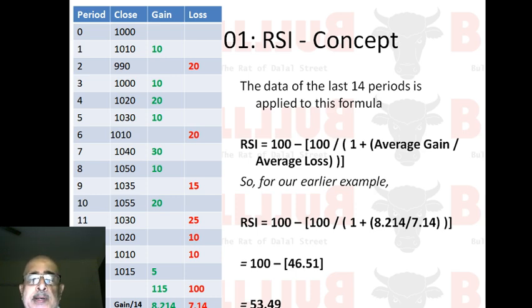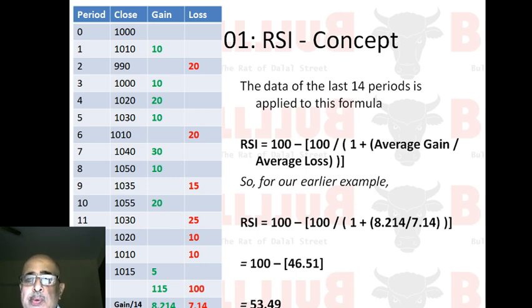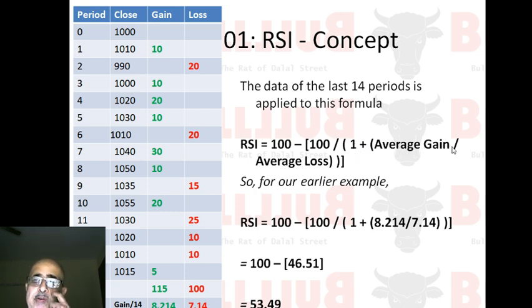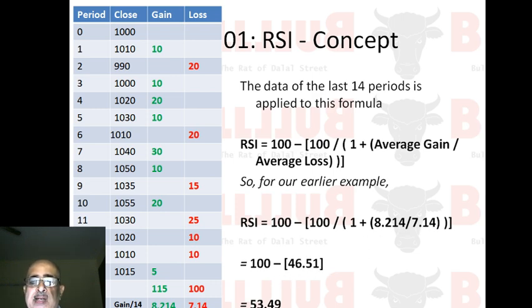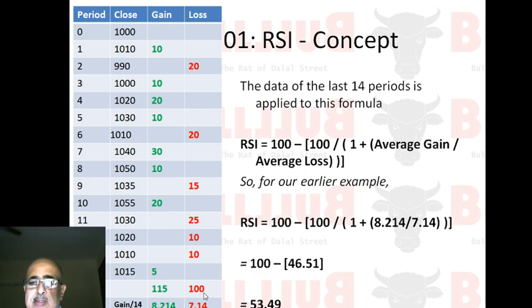You don't have to focus on the formula — that's a technical bit — you need to focus on the RSI levels: 50, 60, 70, 20, 30, 40. But like I said, you've got to know what the indicator is before you apply it. The RSI formula is: 100 minus (100 divided by (1 plus (average gain divided by average loss))). Using our example: 100 minus (100 divided by (1 plus (8.214 divided by 7.14))), which gives 100 minus 46.51, so RSI equals 53.49.